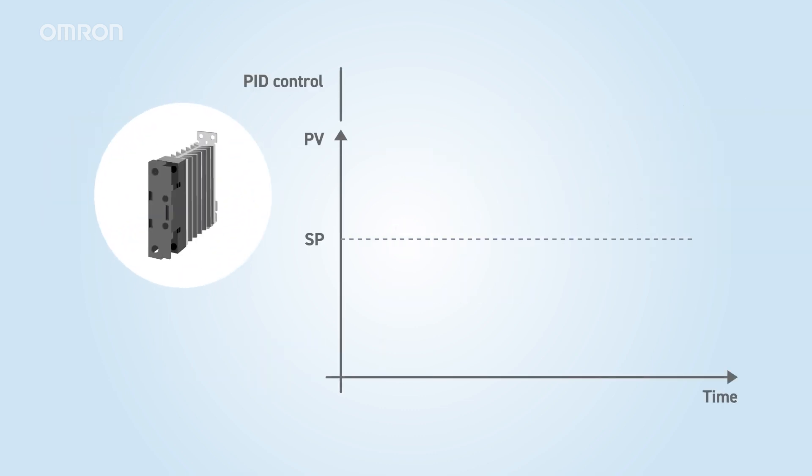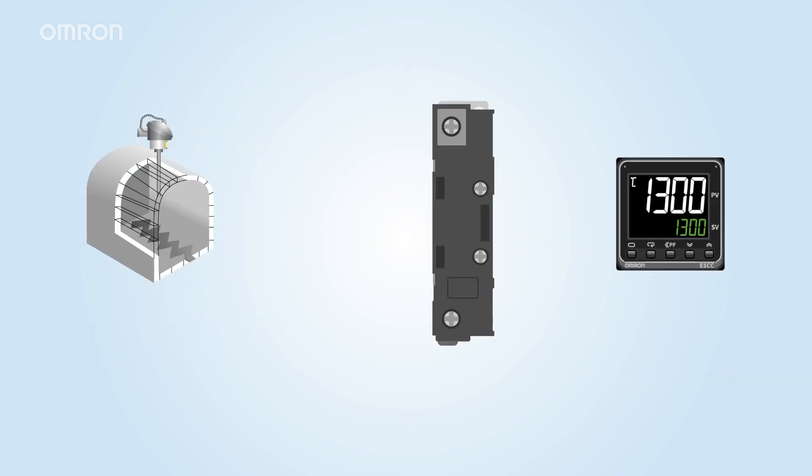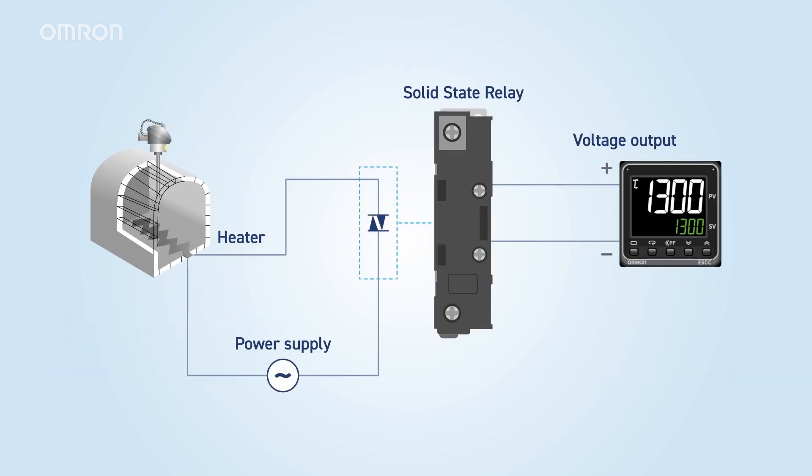Solid-state relays use semiconductor elements. Since they have no physical contacts, there is no lifespan due to the number of open-closed cycles, they can frequently switch the heater on and off, making them suitable for PID control. However, they have higher power losses and require larger sizes for heat dissipation. Click here for the details about our SSRs. When using SSR, a temperature controller with a voltage output is used. The SSR turns the heater on as long as it receives voltage from the temperature controller.